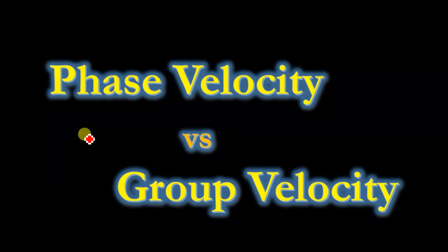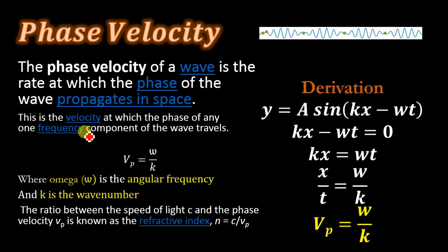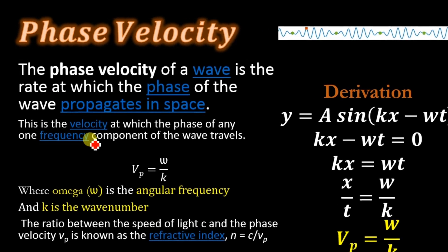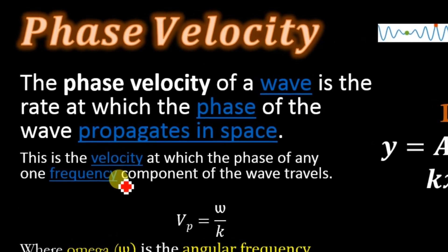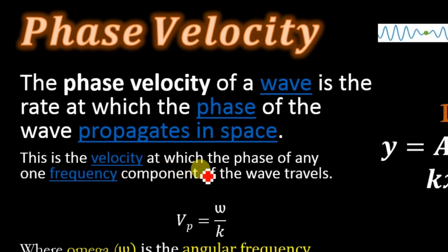Hello, today we will discuss phase velocity and group velocity. The phase velocity of a wave is the rate at which the phase of a wave propagates in space. This is the velocity at which the phase of any one frequency component of the wave travels.